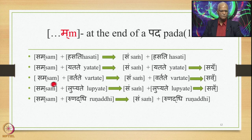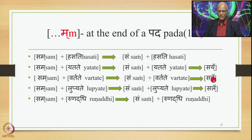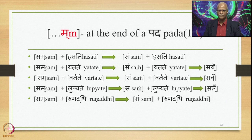Sam plus Vartate: Ma is substituted by Anuswara by 8.3.23, giving Sam Vartate. Then 8.4.59 substitutes this Anuswara by the nasal Parasavarana of Va (nasal V), giving Sam-nasal-V-Vartate optionally. So both Sam Vartate (with nasal V) and Sam Vartate (with Anuswara) are generated.